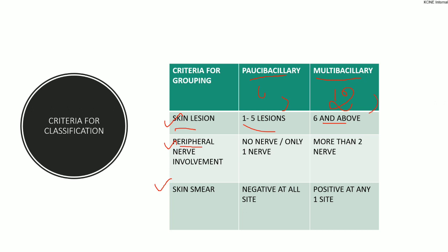In nerve involvement, if there is only one nerve involved or no nerve involvement, we will categorize the patient as Paucibacillary. If there are two nerves involved, they will come under Multibacillary. For skin smear, if it is negative we code the patient as Paucibacillary type; if positive, it comes under Multibacillary type.